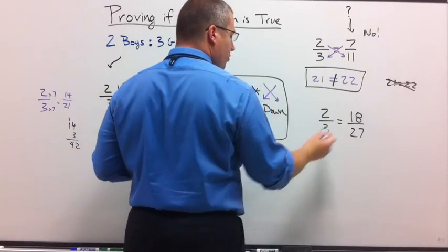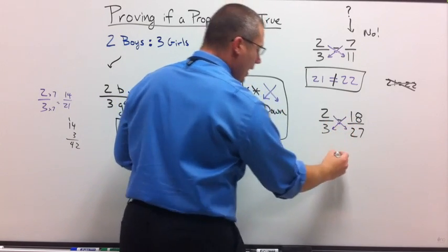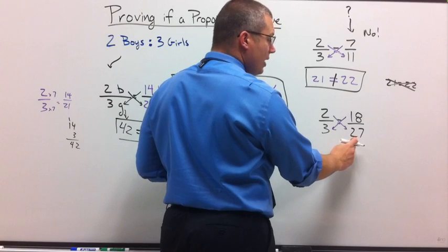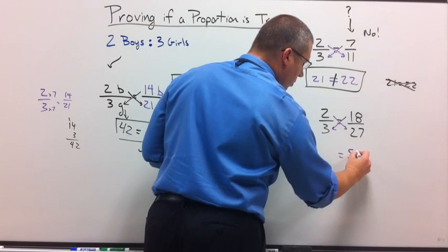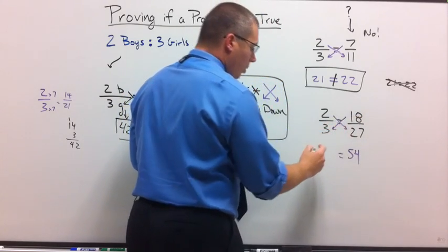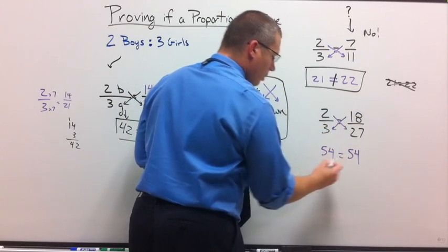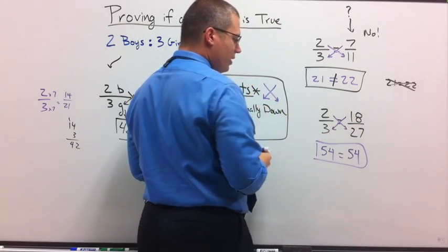Let's check one more. 2 to 3, same ratio. 18 to 27. Multiply diagonally. 2 times 27. 20 doubled is 40, 7 doubles 14, so that's 54. 18 times 3. 30 plus 24 is also 54. Equal. So 18 over 27 is the same.